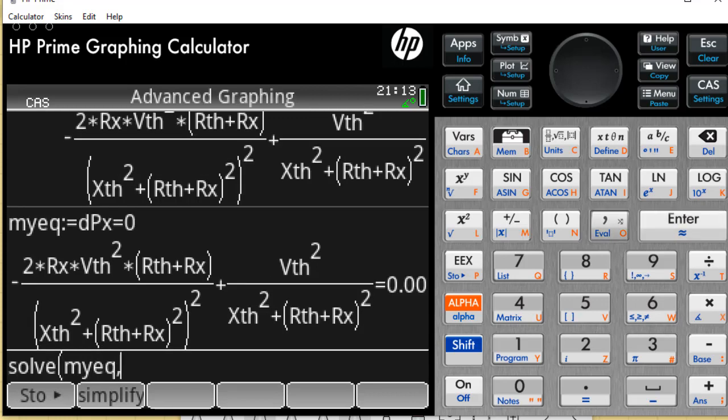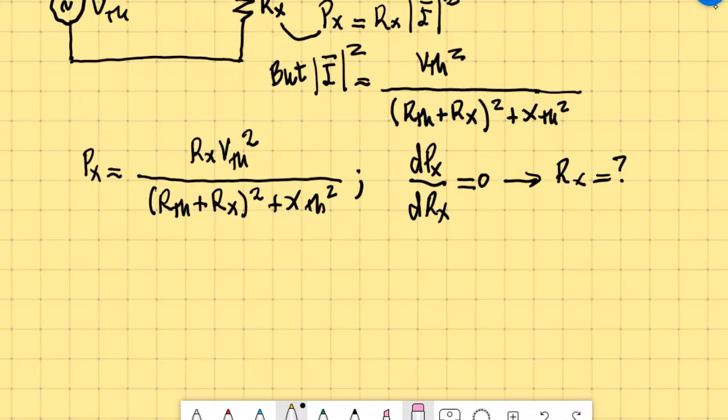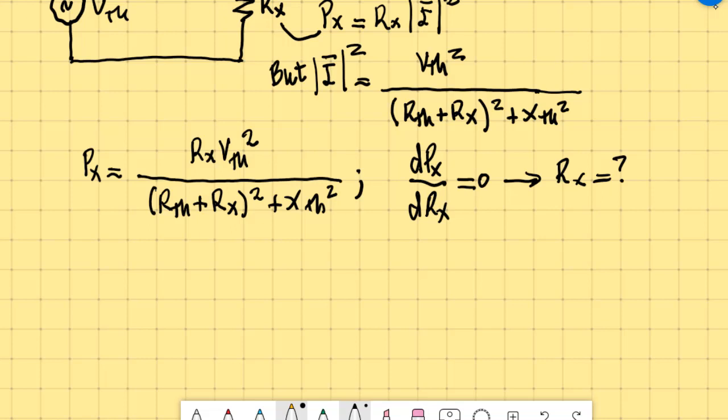Solve my equation for the value of Rx. And what is that value? It has a positive and a negative possibility. Of course, it's a resistor, so it has to be the positive one: square root of R Thevenin squared plus X Thevenin squared. That should be the value of the external resistor if we want that external resistor to extract maximum power out of that circuit.